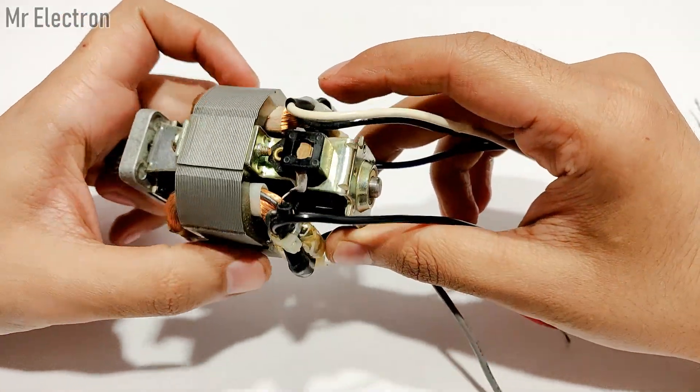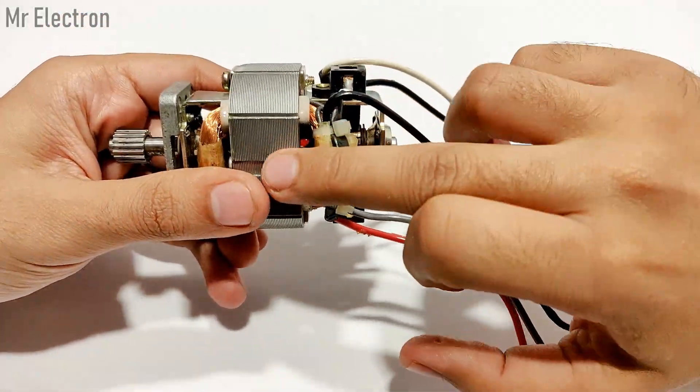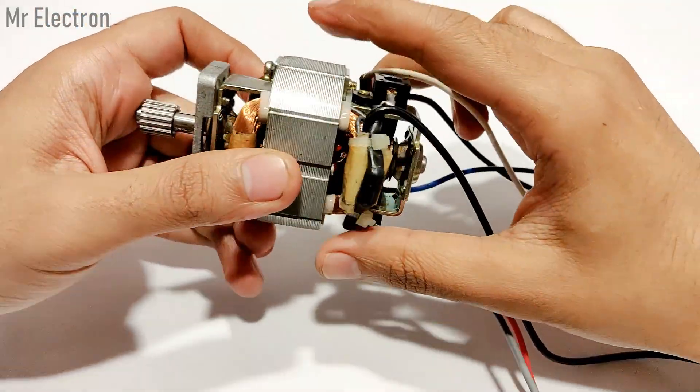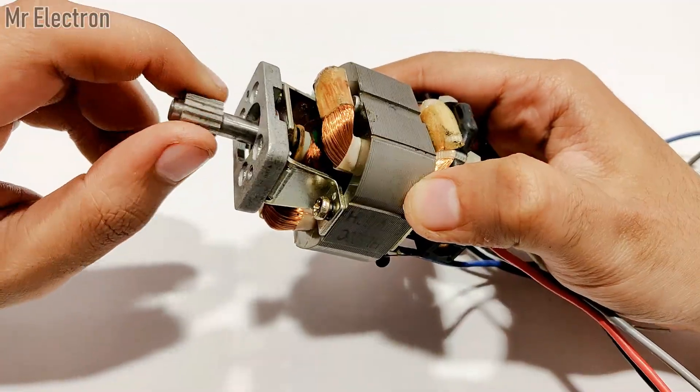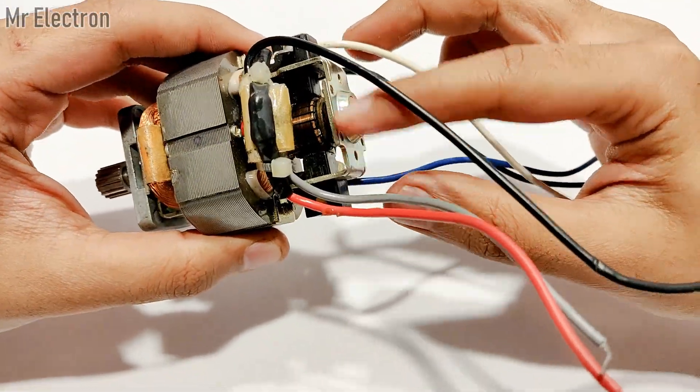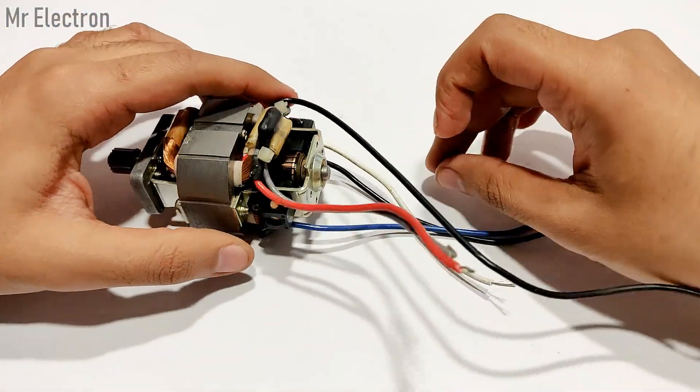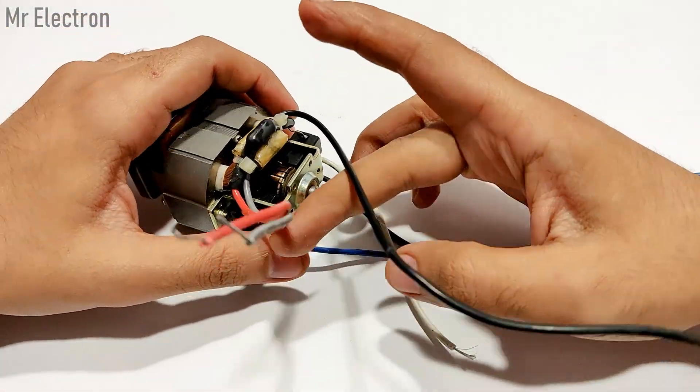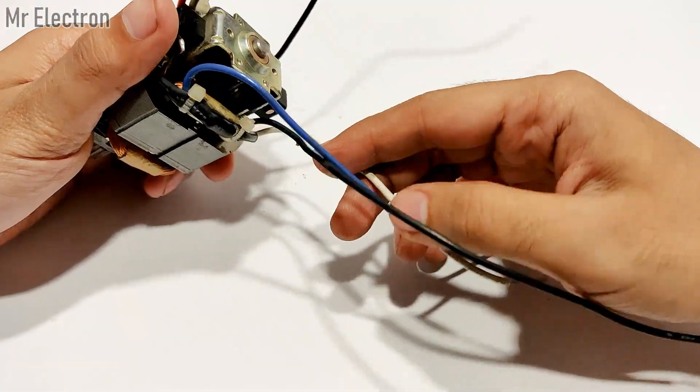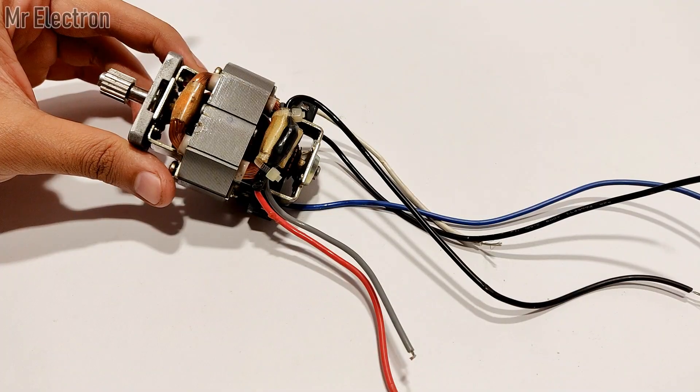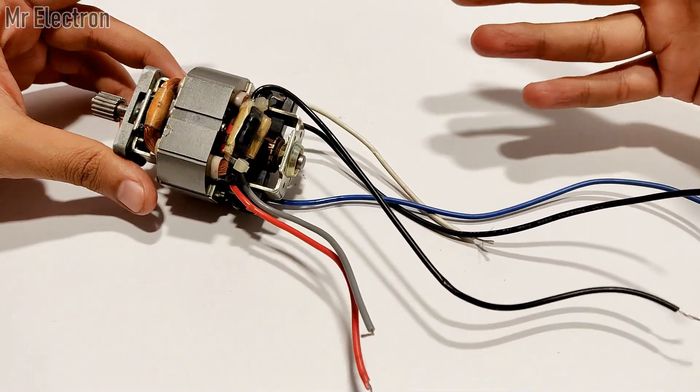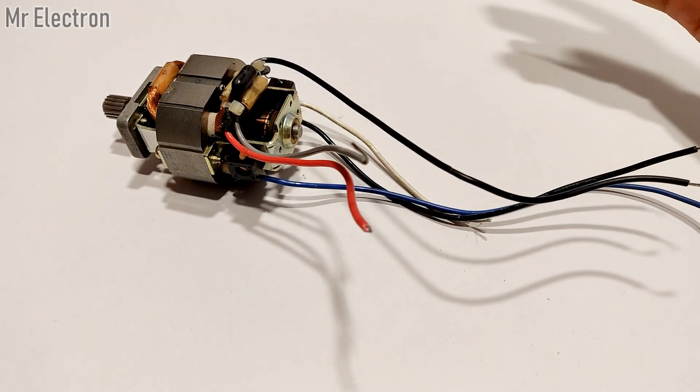You see here, this is one field winding, this is the second field winding, and in the middle is the rotor or armature that is connected to the supply with the help of two brushes and commutator. These three wires are for this field and these three wires are for this field. It doesn't matter the size of the universal motor, the number of wires and connections always remain the same.